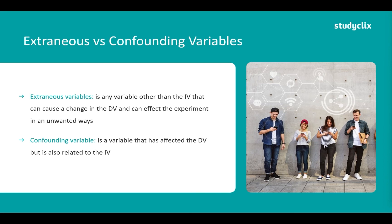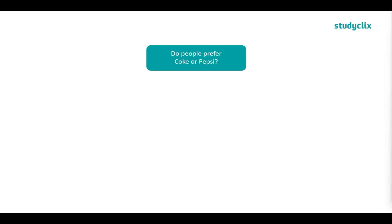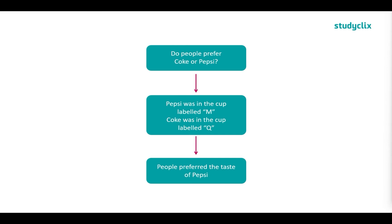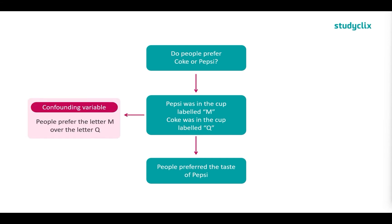Our research question is: do people prefer Coke or Pepsi? This experiment was actually carried out by Pepsi. They put Pepsi in a cup labelled M and Coke in a cup labelled Q, and asked people to try both and say which they preferred. Their results showed that people preferred the taste of Pepsi. Coca-Cola wasn't thrilled with these results, so they replicated the experiment. Their results were quite interesting — they found that people simply preferred the letter M over the letter Q, and did not in fact prefer the taste of Pepsi.